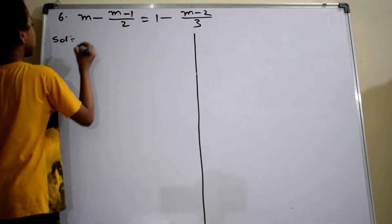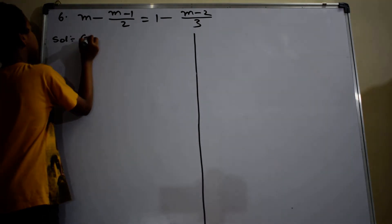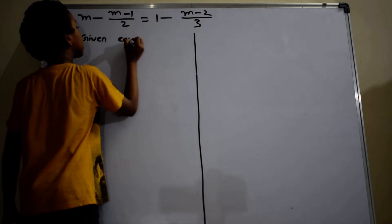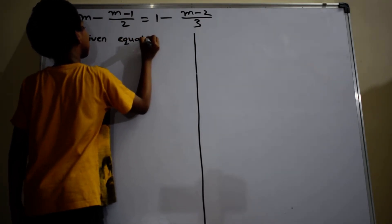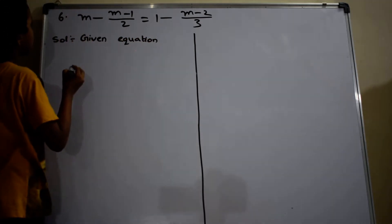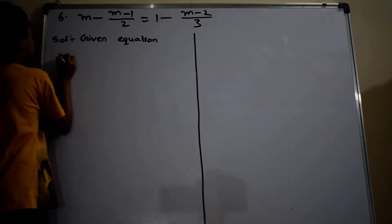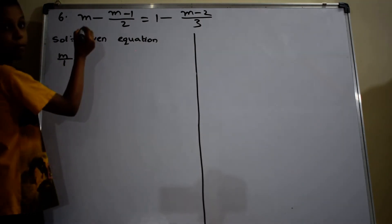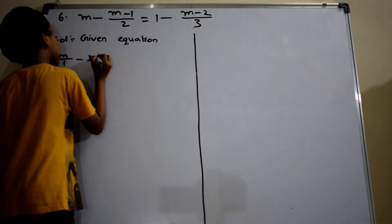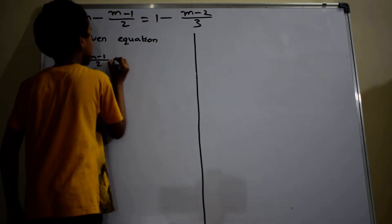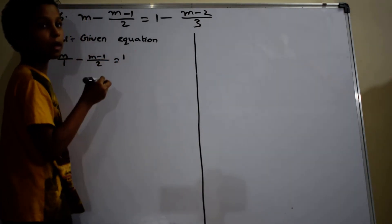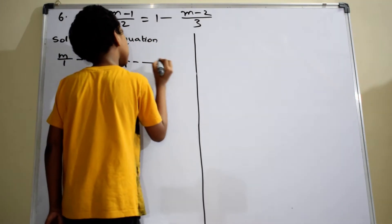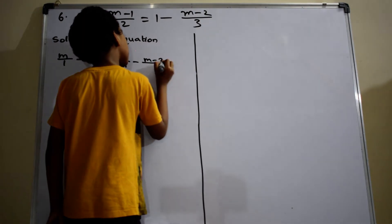Solution. Given equation M — here I am writing M as M by 1 minus (M minus 1) by 2 equals to 1. Here I am writing 1 as 1 by 1 minus (M minus 2) by 3.